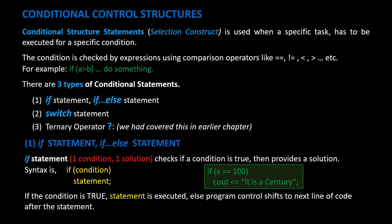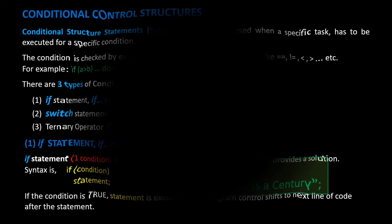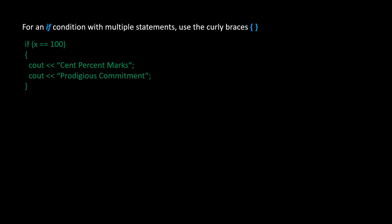Here is an example: if x is equal to 100, cout 'it is a century.' For an if condition with multiple statements, use curly braces. Look at this if statement — when the if condition is satisfied there are two cout statements, so we put them within curly braces.